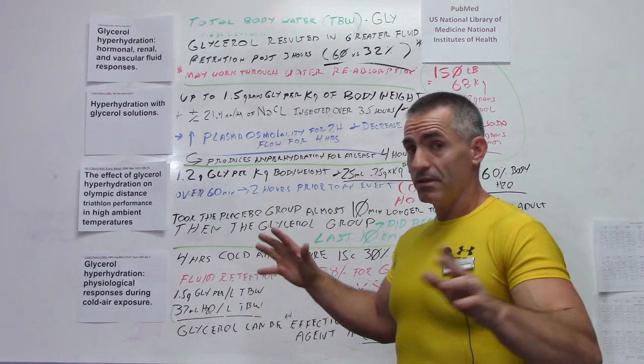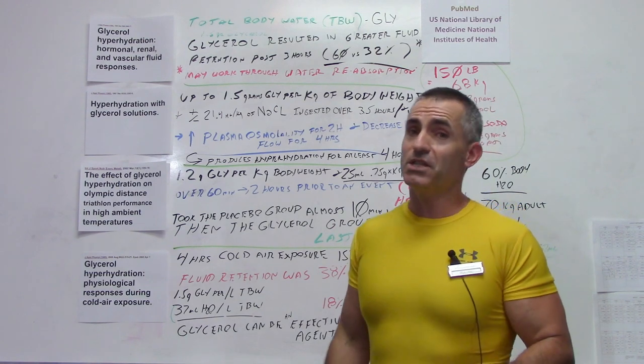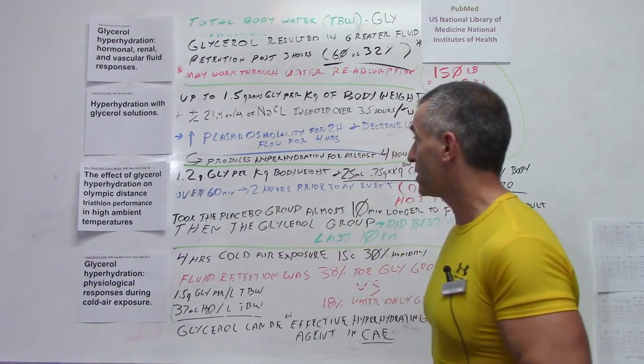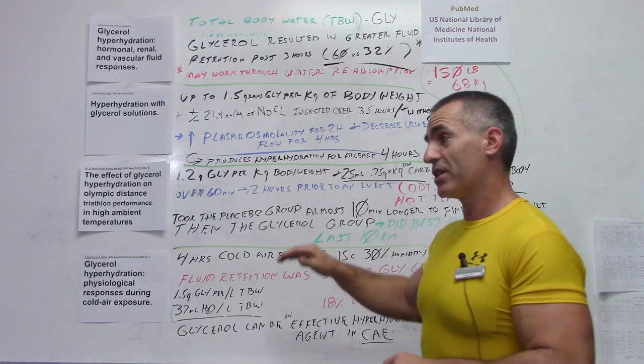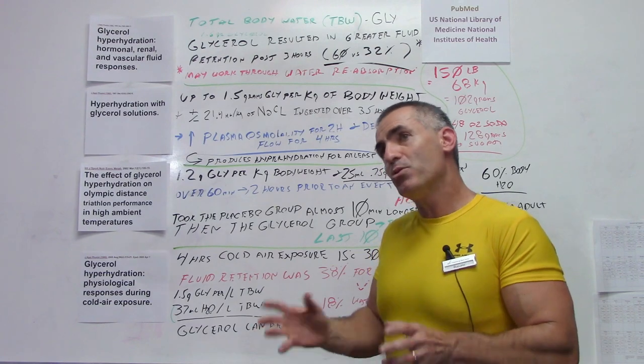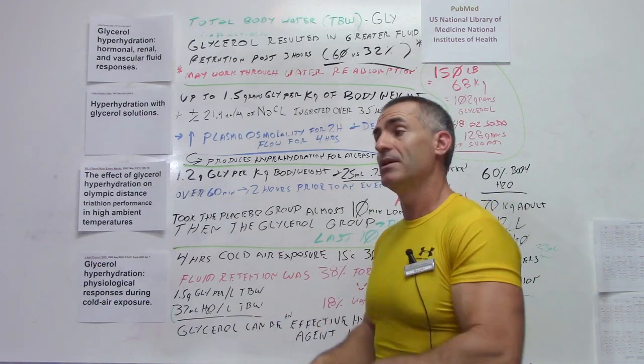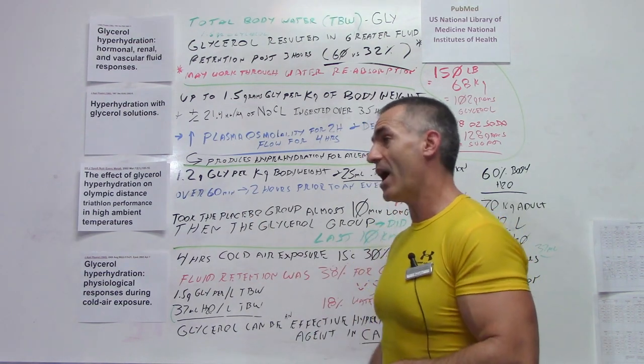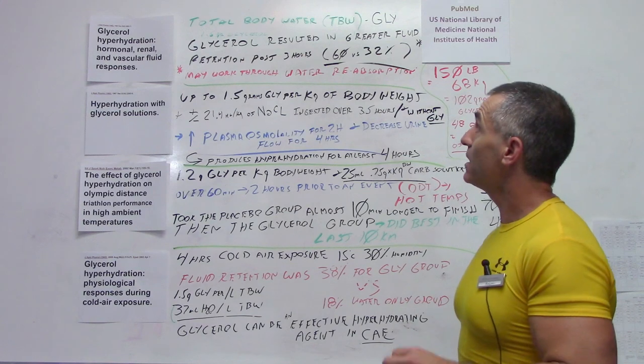Basically, in layman's terms, the group that took the glycerol during the triathlon in high temperature finished 10 minutes faster than the placebo group who just did water and carbohydrate solution. Again, 1.2 grams of glycerol per kilogram of body weight. And they found out that the glycerol group performed best in the last 10 kilometers of the race, maybe because the placebo group would have been dehydrated by that time, but the glycerol group being hyperhydrated had a distinct advantage, especially in high ambient temperatures.